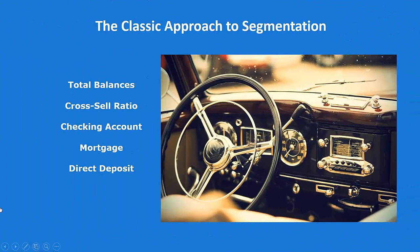The classic approach to segmentation most folks I run into is balances — what are their household balances? They've got a $100,000 mortgage, a $10,000 checking account, a $20,000 CD — $130,000 in balances. But that doesn't necessarily mean they're profitable. Another common segmentation approach is cross-sell ratio: one service, two services, three services.